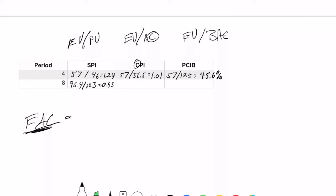For the end of period eight: SPI = $95,400 ÷ $103,000 = 0.93. CPI = $95,400 ÷ $98,000 = 0.97 — meaning for every dollar we spend we're getting 97 cents worth of value. Percent complete = $95,400 ÷ $125,000 ≈ 76.3%. So we're doing pretty well in terms of budget given that we're closing in on the project being done.